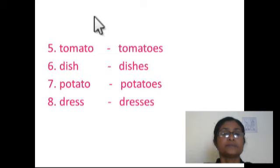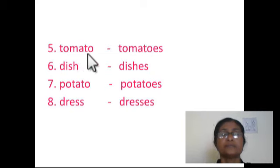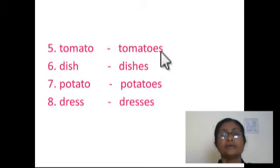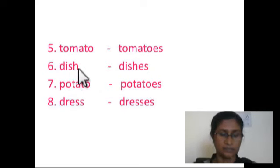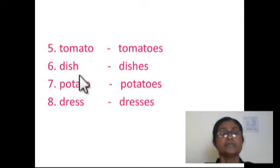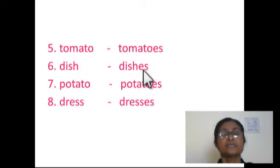Tomato. The last letter of tomato is o. After o we add es. We will get the plural form: tomatoes. Dish — the last letter of dish is sh. After sh we add es. We will get the plural form: dishes.